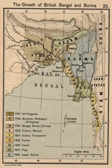Shillong was the summer capital of Eastern Bengal and Assam. There were four administrative divisions in the province, including the Assam Valley Division, Chittagong Division, Dhaka Division, Rajshahi Division and the Surma Valley and Hill Districts Division.